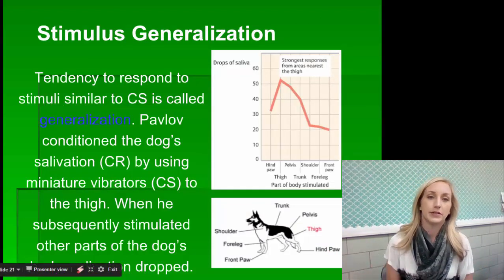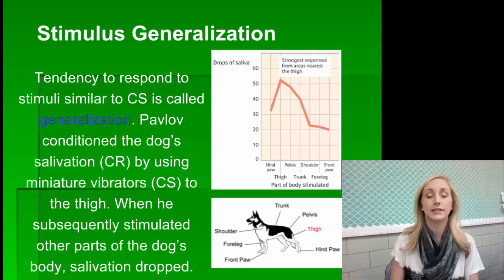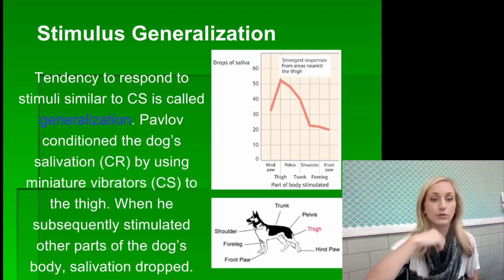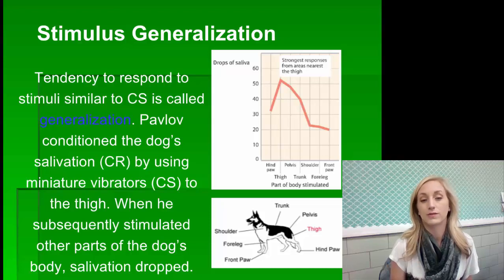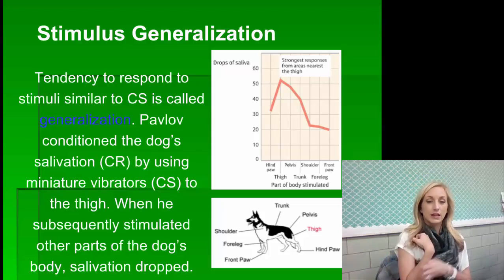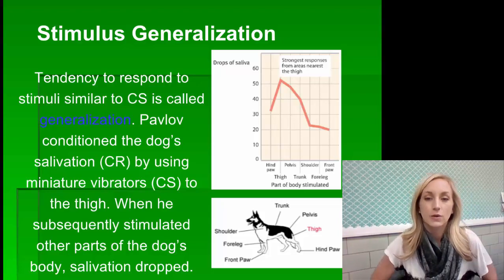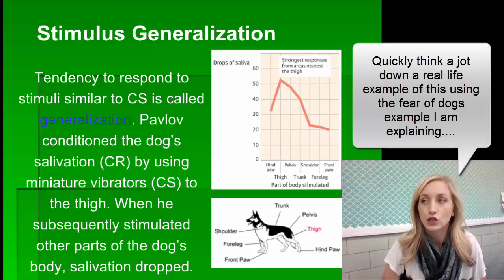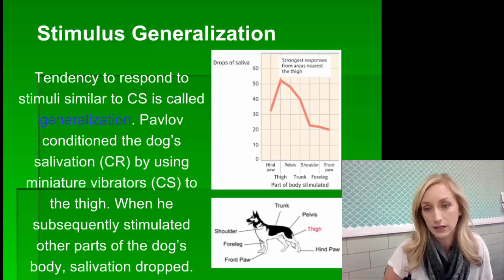Let's cover a couple more vocabulary terms. Stimulus generalization — to generalize is to broaden. It's a tendency to respond to stimuli similar to the conditioned stimulus. For example, Pavlov conditioned the dog's salivation using miniature vibrations to the thigh. A real-world example: if someone was bitten by a German shepherd and then becomes afraid of all dogs, they have generalized the stimulus — that is stimulus generalization.